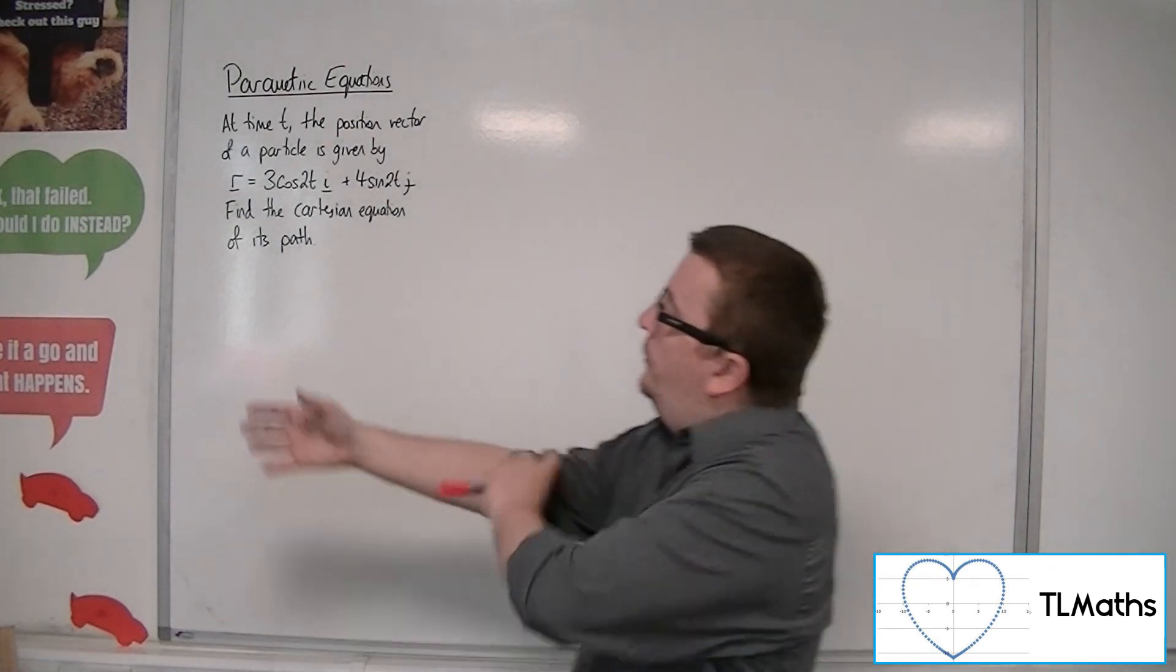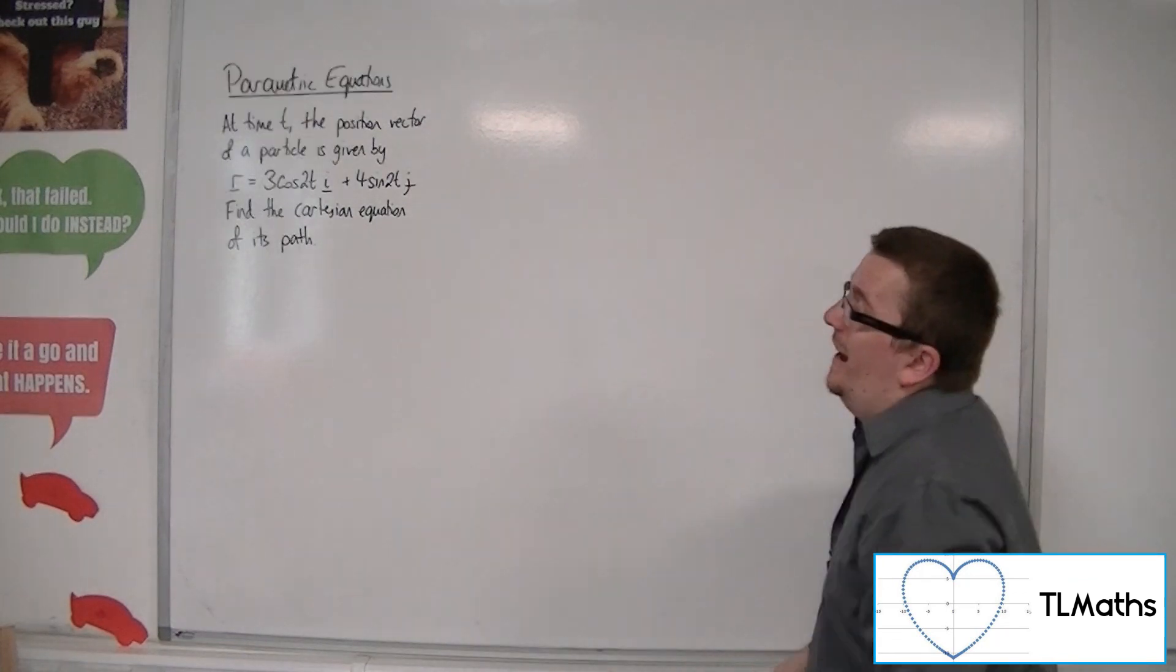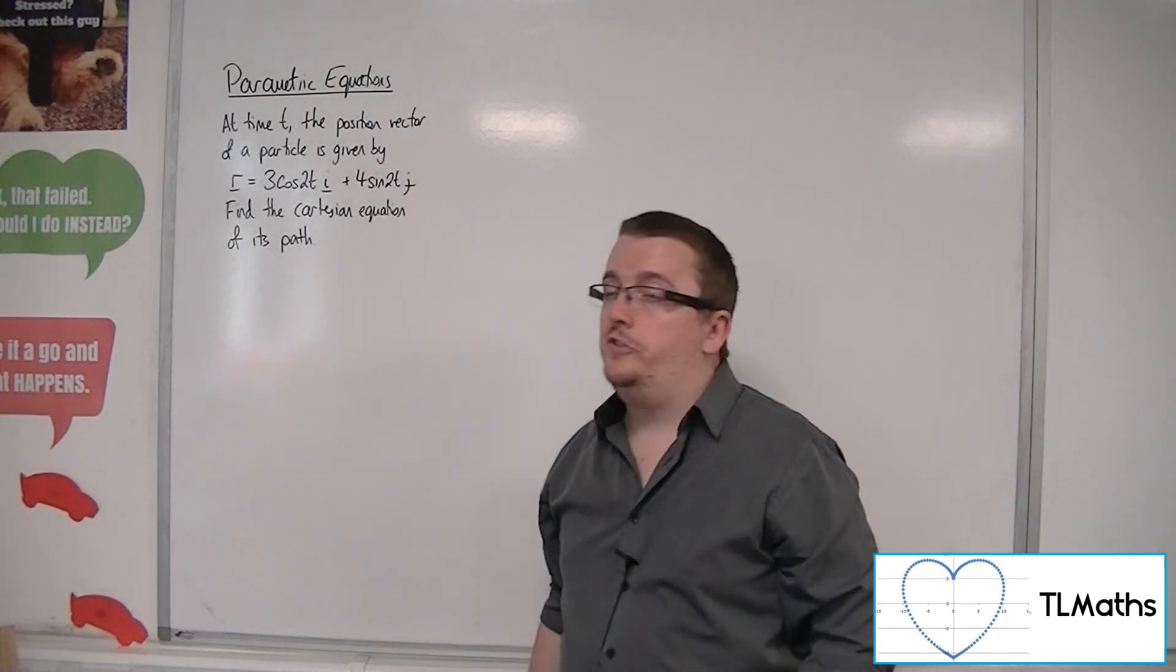So it's got an x component, horizontal component, of 3 cos 2t and a vertical component, 4 sine 2t.